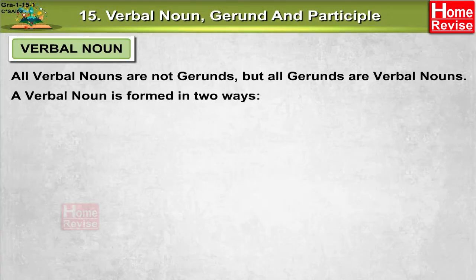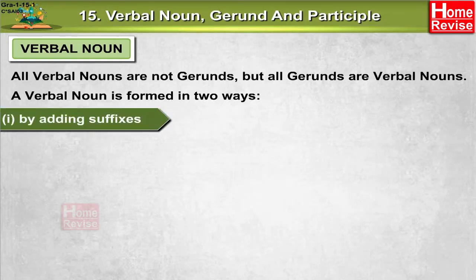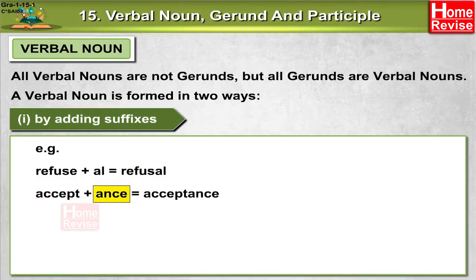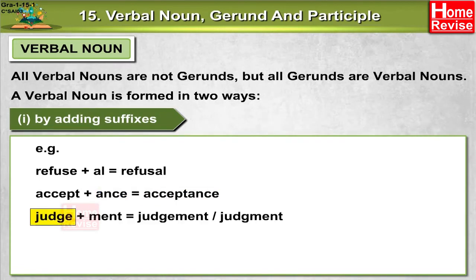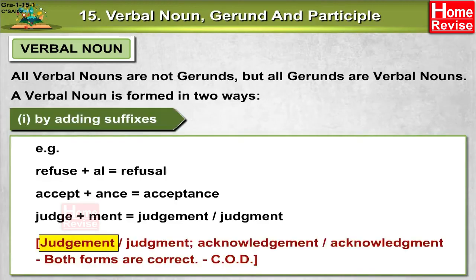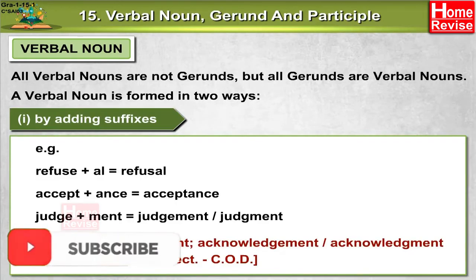A verbal noun is formed in two ways. First, by adding suffixes. For example: refuse plus -al equals refusal; accept plus -ance equals acceptance; judge plus -ment makes judgment.